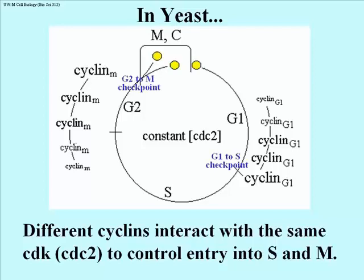Imagine a cell that finds itself in a nutrient-poor environment, and somehow it senses that it hasn't reached the right size yet. That cell will not pass from G1 to S — another checkpoint. Likewise, if insufficient cyclin M is made, the cyclin M-CDC2, the MPF of yeast, will not reach its threshold level, and the cell will not enter mitosis.